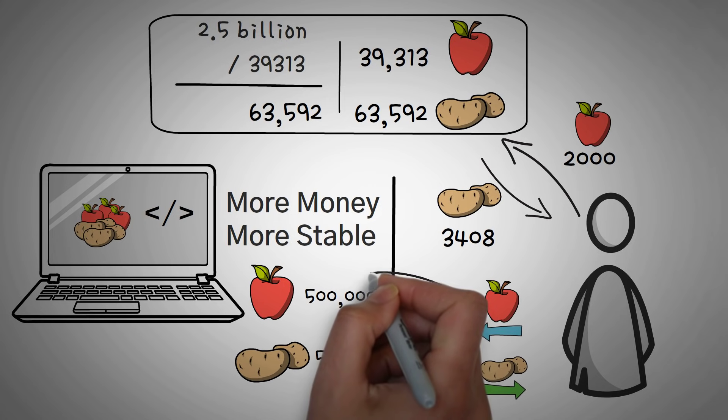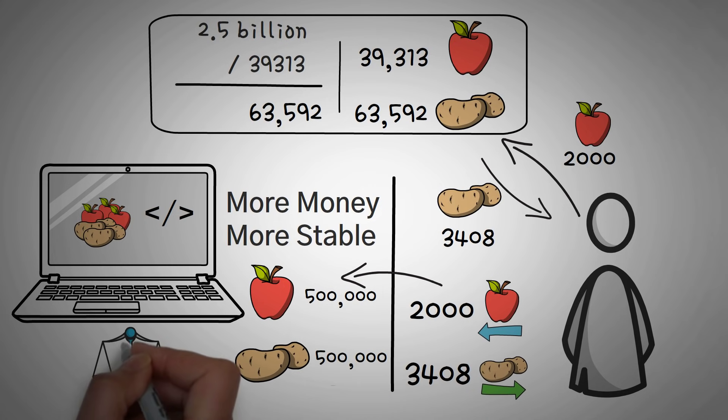If there were half a million apples and half a million potatoes, and you still only wanted to trade around 2,000 apples, the price difference wouldn't change as much as we saw in our example. Because the amount of apples you were trading, in proportion to the amount of apples in the pool, was a very small amount.